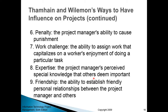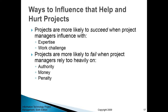Friendship cannot be superficial — you can't become someone's friend just by saying hello. Any relationship goes both ways. It's about helping people, using your resources to do something genuinely good for somebody. People are not dumb and they can sense fake friendship. Research shows that projects are more likely to succeed when you influence people through expertise and work challenges, and more likely to fail when you try to influence people through authority, bossing them around, money, or penalty.